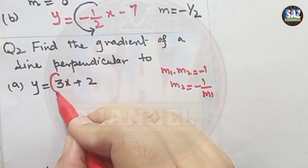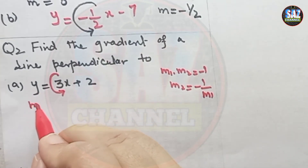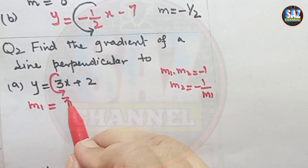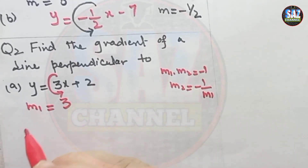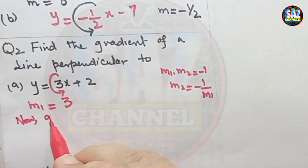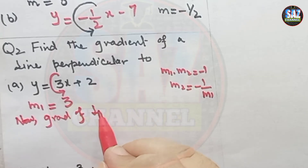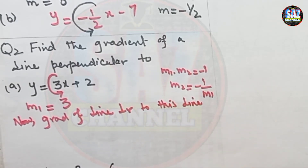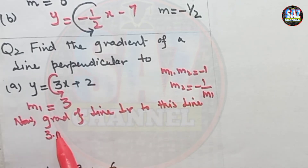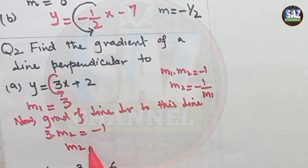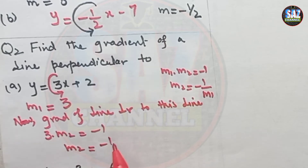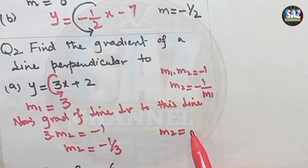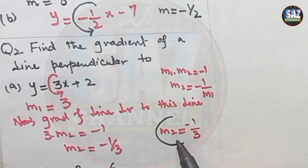Looking at the given line expressed in standard form y equals mx plus c, the gradient m1 of this line is 3. Now, the gradient of the line perpendicular to this line: since m1 is 3, we have 3 multiplied by m2 equals minus 1, so m2 equals minus 1 by 3. The required gradient is minus one-third — this is the gradient of the line perpendicular to the given line.